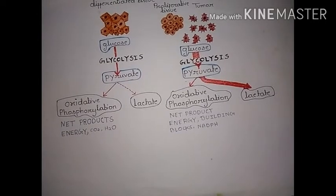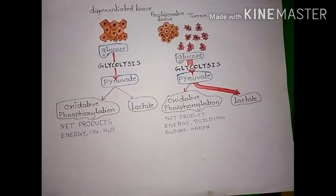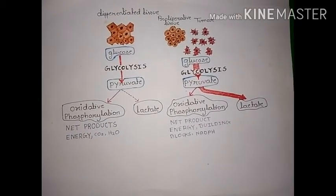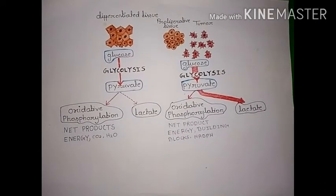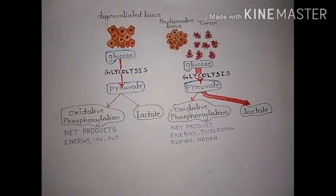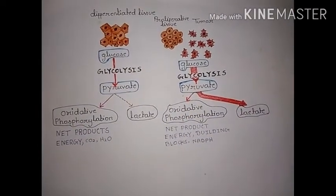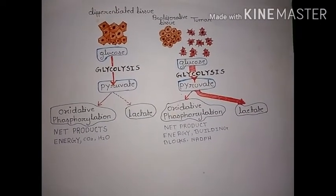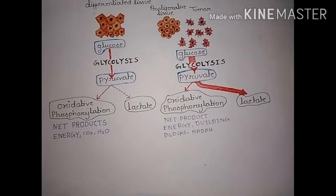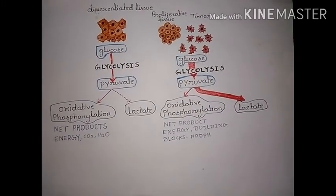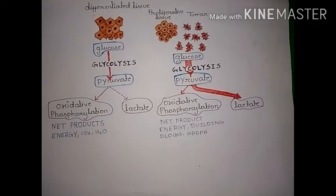But why do tumor cells produce more lactate? There are several effects, known as the Warburg effect. The Warburg effect, named after a scientist, explains this process. It states that tumor cells uptake more glucose than normal cells and transform that glucose into pyruvate through glycolysis. The major amount of that pyruvate is then transformed into lactate.